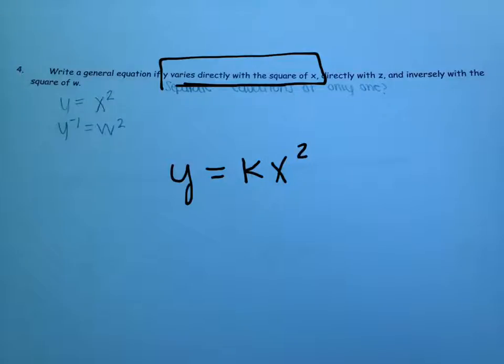To vary directly with z means it equals some constant, some different constant times z. And to vary inversely with the square of w means that it is equal to some constant divided by w squared.